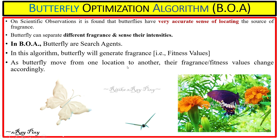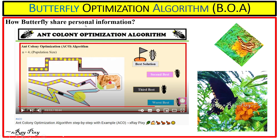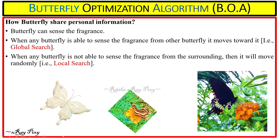Based on scientific observation, it is found that butterflies have a very accurate sense of locating the source of food fragrance. In this algorithm, butterflies are the search agents and they generate fragrance using fitness values. We use fitness values and intensity for the fragrance, and as a butterfly moves from one location to another, its fragrance — that is, the fitness value — changes accordingly. Butterflies share personal information by sensing fragrance in the air using their antennas. When any butterfly is able to sense the fragrance from another butterfly, it moves toward it.